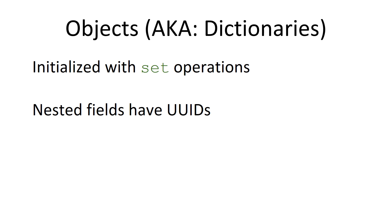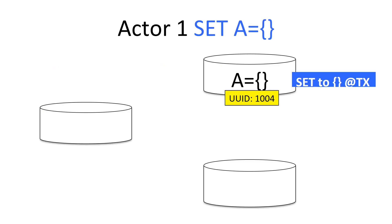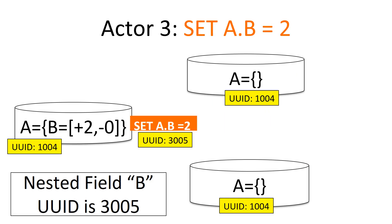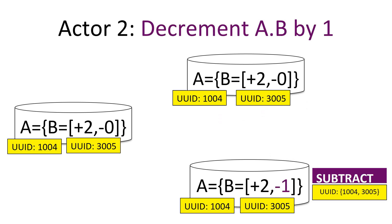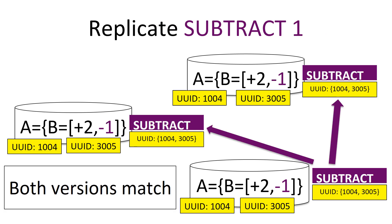Now let's get into nested stuff — objects and dictionaries. We initialize them with set, and the key takeaway is that nested fields have their own UUIDs. Initialize an empty object, replicate it, then set a.b equals 2 — meaning b inside of a set equal to 2. Both a (the dictionary) and b (the element in the dictionary) have their own UUIDs. That gets replicated, and now a subtraction is going to specify both the UUID for a and the UUID for b when it replicates. When both versions match, it's applied; otherwise it's ignored. This applies to arbitrarily deep nesting, like a.b.c.d.